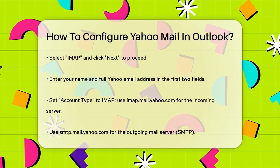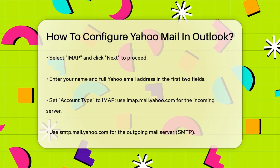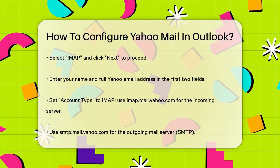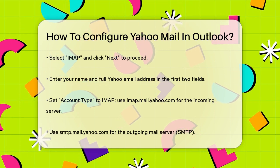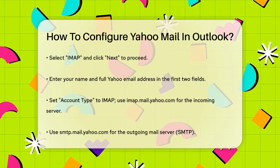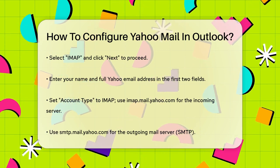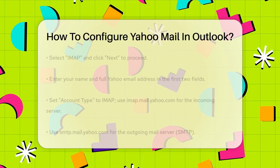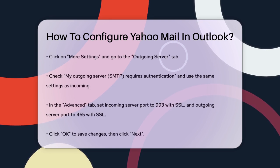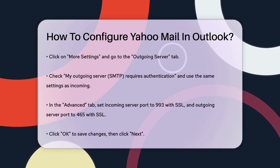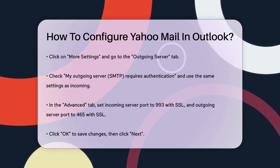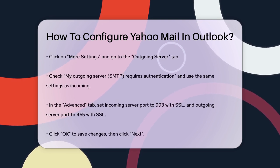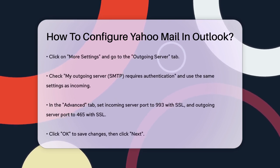In the Advanced tab, enter the following: for the incoming server (IMAP), use port 993 and select SSL as the encrypted connection type. For the outgoing server (SMTP), use port 465 and again select SSL.